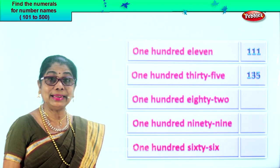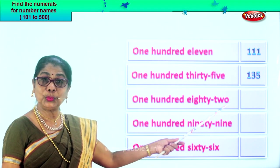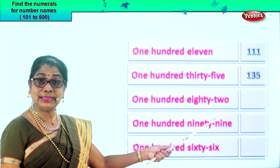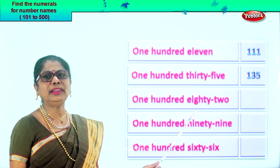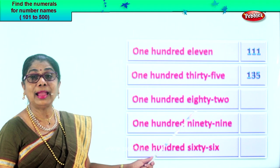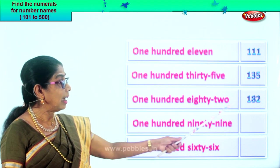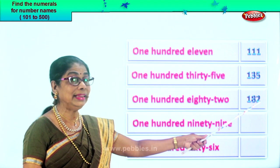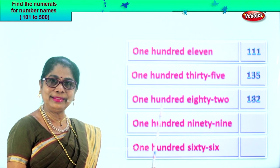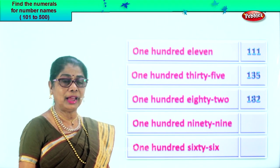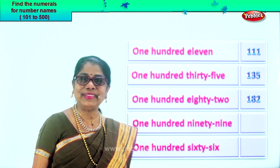Are you enjoying the exercise? Let's go to the next number name. One hundred eighty-two. One hundred is here. And what else is there? Eighty-two. Hundredth place one. And then you have eighty-two. Eight in the tens place, two in the ones place. So one hundred eighty-two.